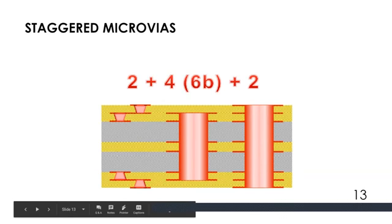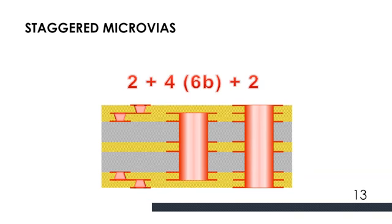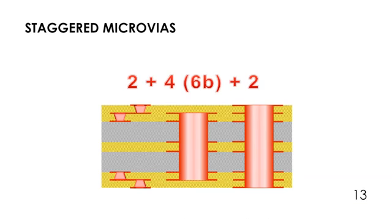Always prefer to have staggered vias rather than stacked. Sometimes stacked vias are created when there is an aspect ratio issue — if a connection from layer 1 to layer 3 cannot be achieved because of aspect ratio, then you connect 2 to 3, then 1 to 2 — one over the other. That is how stacked vias are formed.